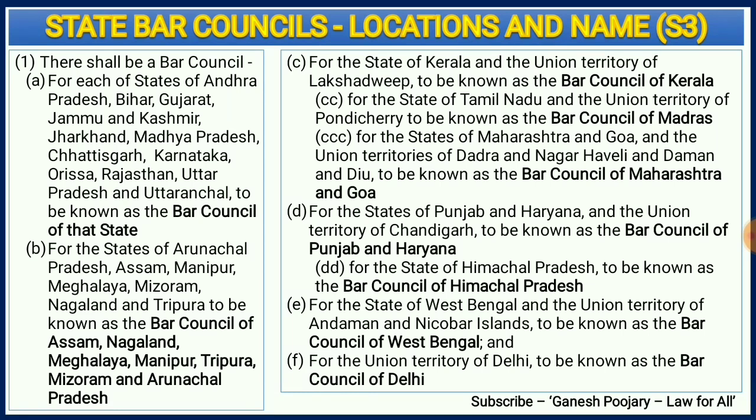Section 3(1) discusses about the locations and names of different bar councils. The Advocates Act 1961 came in the year 1961 but many states and union territories have been added after that. The number of bar councils are also increasing and I have brought almost all the amendments as far as this particular section is concerned. We have different bar councils for different states.